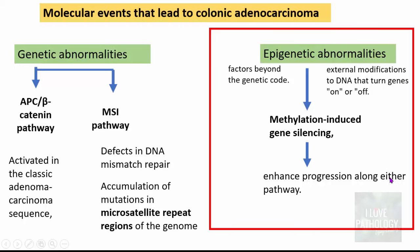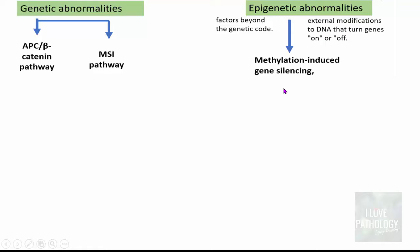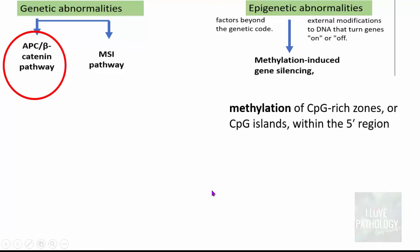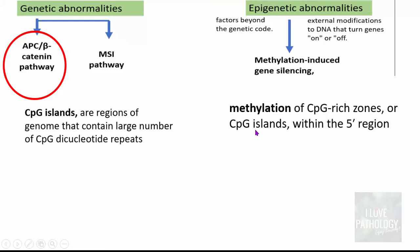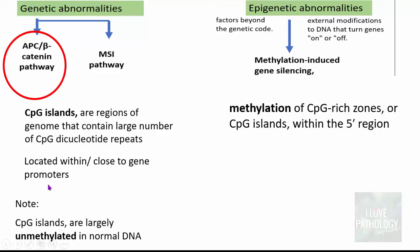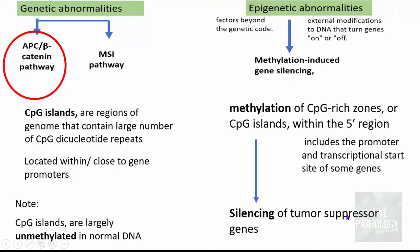Regarding epigenetic abnormalities — methylation-induced gene silencing — in the APC or beta-catenin pathway, there is methylation of CpG-rich zones or CpG islands within the 5-prime region. CpG islands are regions of the genome that contain a large number of CG dinucleotide repeats, located within or close to gene promoters. Normally, CpG islands are unmethylated in normal DNA. When these unmethylated islands undergo methylation, it results in silencing of tumor suppressor genes.